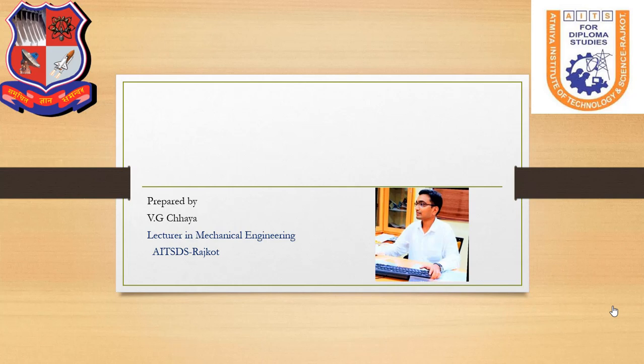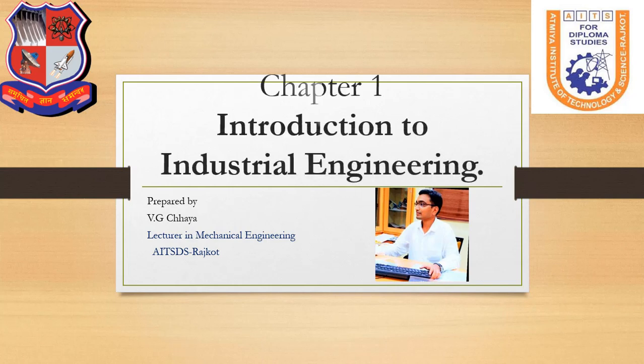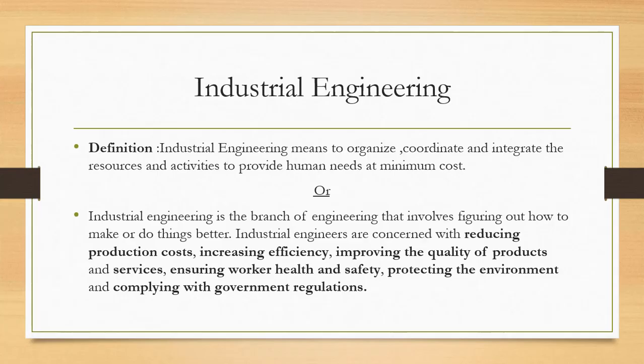In this lecture, I am going to discuss what is industrial engineering and what are the objectives of industrial engineering. First, we are going to define industrial engineering. There are two terms: industry and engineering. Industrial engineering means to organize, coordinate, and integrate the resources and activities to provide human needs at minimum cost.